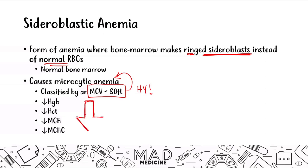The hallmark for a microcytic anemia is going to be an MCV that is less than 80. That should clue you in to microcytic anemia.